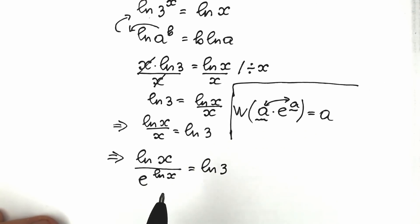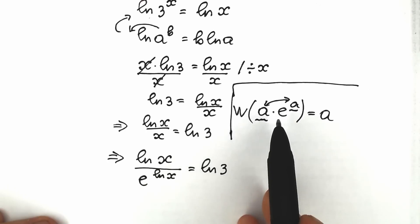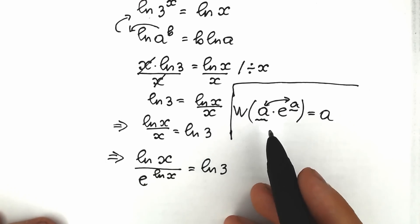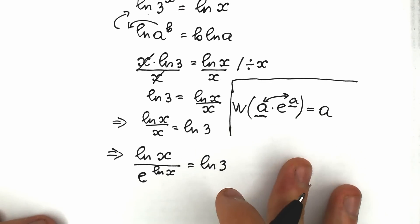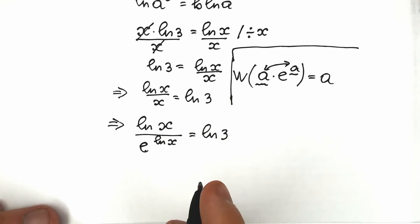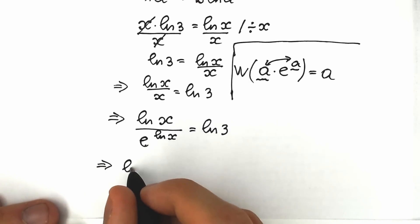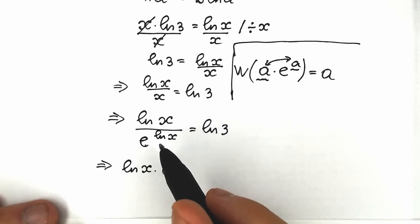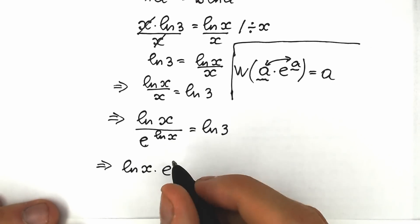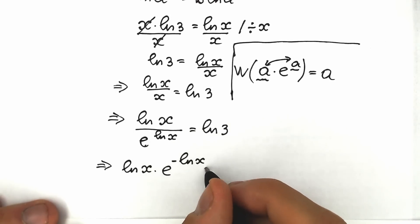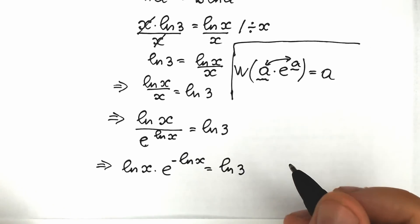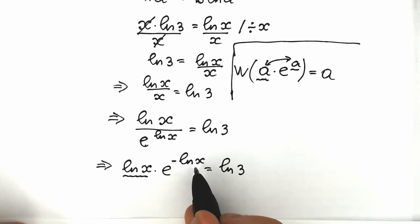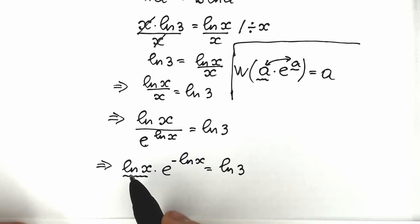Equal to natural log 3. Right now we have e, which is the first element we need for the Lambert W function. Let's bring the expression from the denominator to the numerator. So we have natural log x times e to the power minus natural log x equal to natural log 3. We have natural log x and minus natural log x — that's a and minus a, not a and a.